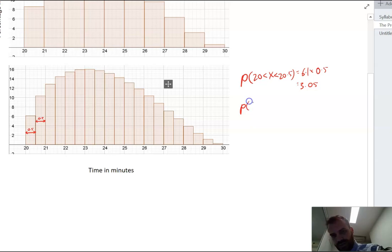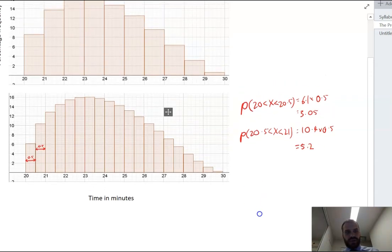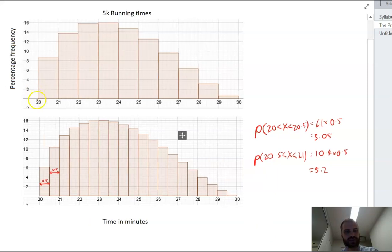Now I can do the same here. The probability that 20.5 is less than x, which is less than 21. And here we've got about, it looks like about 10.4, and I can multiply that by the bin width as well. And that's going to be 5.2. So I can say that the total probability of running between 20 and 21 is 3.05 plus 5.2, about 8.2. Now, if I go back to my original histogram, you can see that the probability of running between 20 and 21 is about 8.2.